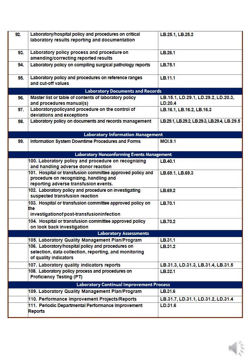Number ninety-two is the laboratory/hospital policy and procedure on critical test results and panic values. Tell me the policy, the form, and the logbook for what you do when a critical value is reached — the surveyor will check this against your policy and logbook. Number ninety-three is the laboratory policy and procedure on amending and correcting a reported result — if a result was wrong, given to the wrong patient, how do you amend, withdraw, and correct the result and send it back to the requesting department.